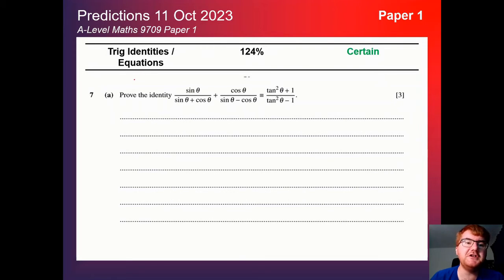On to trig identities and equations. Again, no surprise that this does turn up. Usually towards the middle of the paper, so not the easiest questions, but not the hardest questions either. And usually this is a very standard question here, where you need to prove an identity and then use that to solve a trigonometric equation. So making sure you're familiar with that kind of question will help you get those top grades.